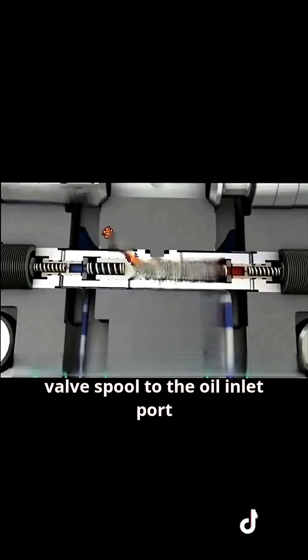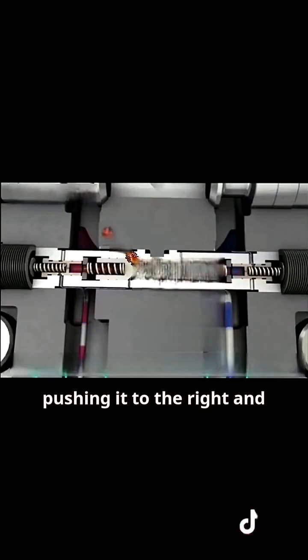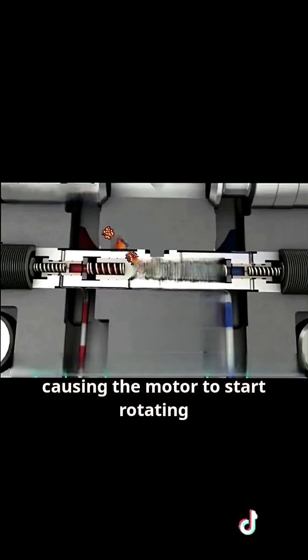When the control valve switches the rotary valve spool to the oil inlet port, the high pressure oil acts on the left side of the actuation head, pushing it to the right and cutting off the bypass oil circuit, causing the motor to start rotating.